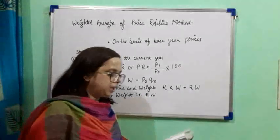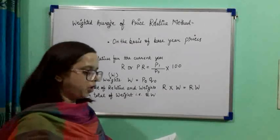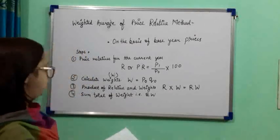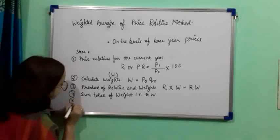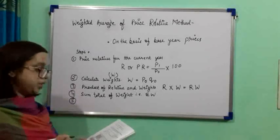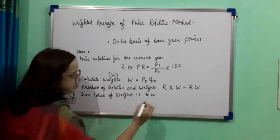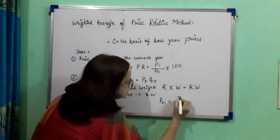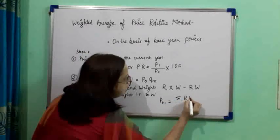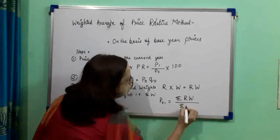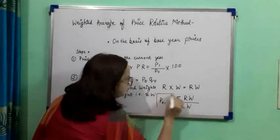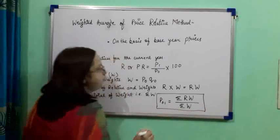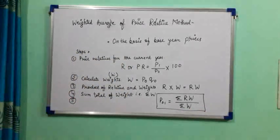We use the following formula to find the weighted average of the price relative: P01 = ΣRW / ΣW. This is the formula for the Weighted Average of Price Relative Method.